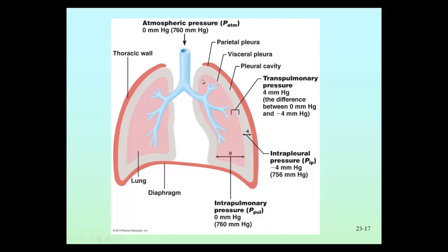First, we're going to talk about the lung tissue itself. The lung tissue is an elastic tissue. And as a result, when the lungs fill with air during inhalation, as that air is exhaled, the lungs recoil backward and to a smaller position. So the lung is made up of an elastic tissue that promotes its expansion and its recoil back toward the resting state. There are some different pressures as a result of that.